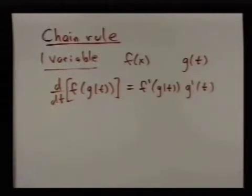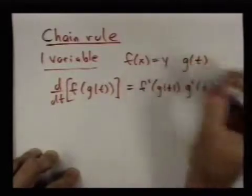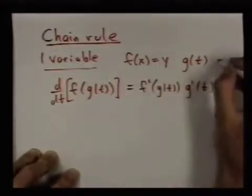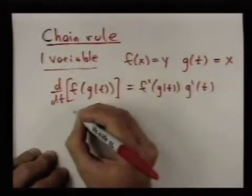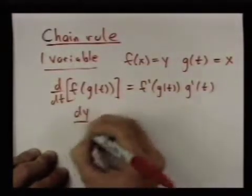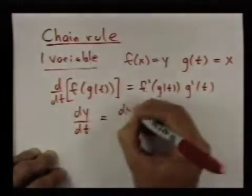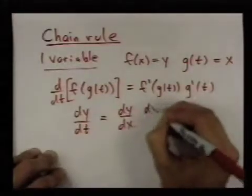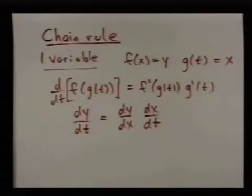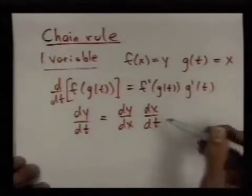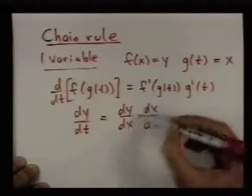There's a shorthand for this. If we think in terms of variables — y as a function of x and x as a function of t — the Leibniz notation you might be familiar with is dy/dt equals dy/dx times dx/dt. This is very easy to remember, but it's also a little misleading because you have to remember to plug in g of t.